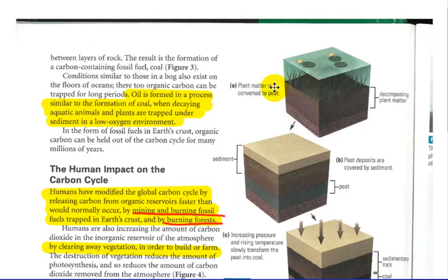So here's a picture here. We have a water area, a swamp, and then we have the matter underneath on the floor of that swamp, and it's kind of trapped there, so it's not going to decompose and release the carbon back to the atmosphere. And so if it's trapped, what could happen over time is oil is formed in a process similar to the formation of coal when decaying aquatic animals and plants are trapped under sediments in a low-oxygen environment. And that's how we get our fossil fuels from decaying animal and plant matter over centuries.